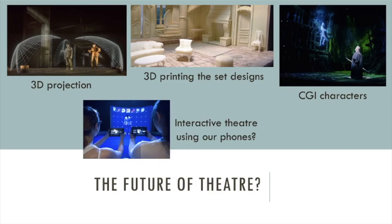Lastly, there are some performances that are starting to have the audience use their own phones. The idea is that you would download an app and actually use your phones to help decide what happens in the performance. When you think about it, that's amazing — because usually the theatre is somewhere we're told to put your phone away. But why not use this technology? Maybe the audience can actually become involved in deciding what happens with the story. We don't know what's going to happen with these ideas, but theatre is trying to keep up with technology and keep innovating.